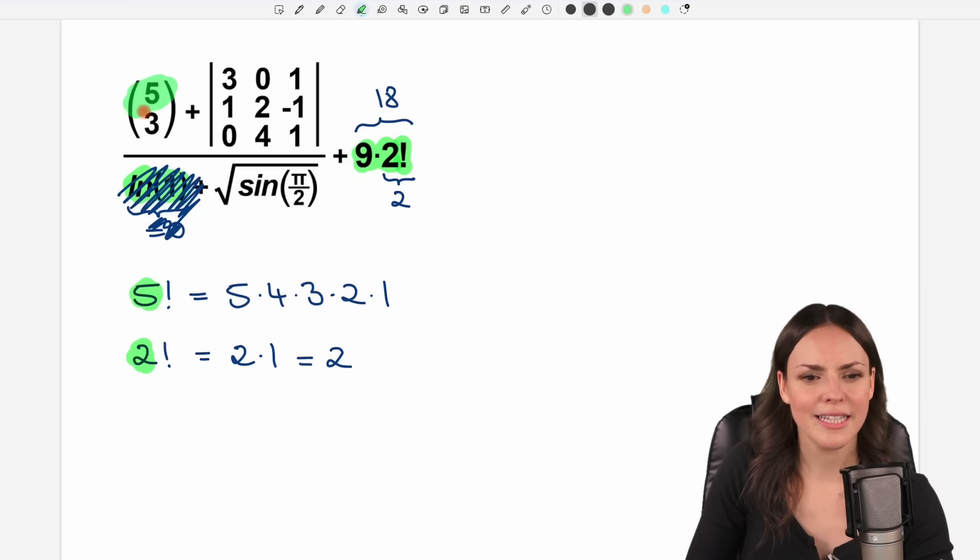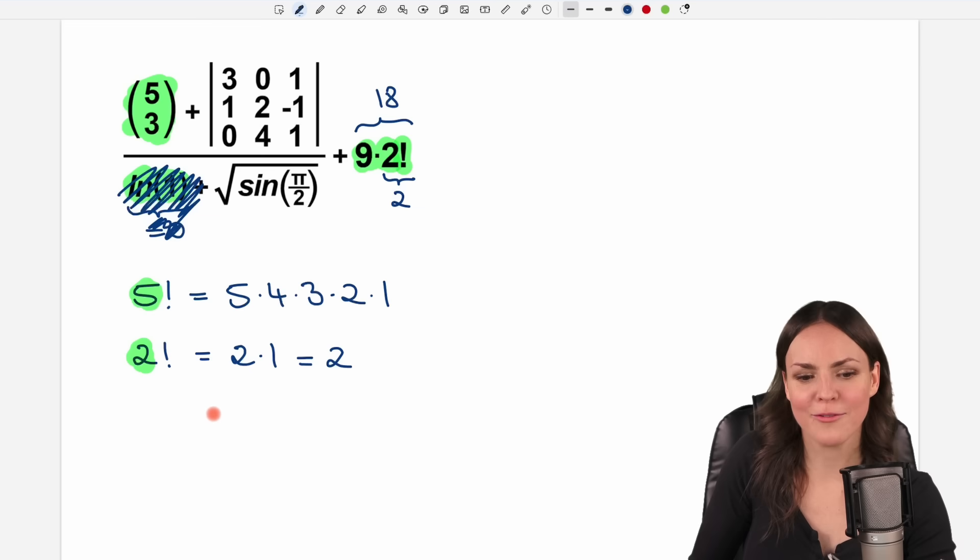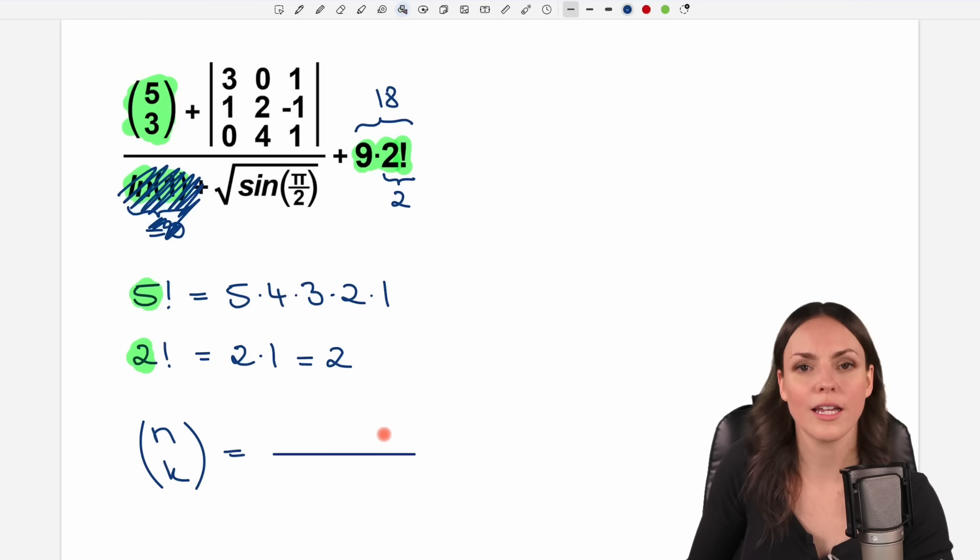Then maybe we can take a look at this thing here. This is not a fraction. This actually is a binomial coefficient. 5 choose 3. How can we calculate this thing? Well, there is a formula. If you have n choose k in general, then this is calculated by a fraction. You take the first number, the n, and use the factorial. And in the denominator, you take the other number, the k, and also factorial. And then you multiply this by n minus k. So you subtract these two numbers. We have n minus k. And then again factorial.